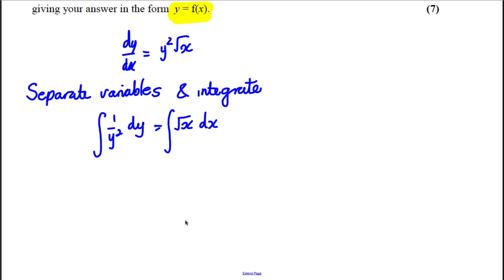So we're integrating 1/y² with respect to y, and we're integrating √x with respect to x. To integrate, it's easier if they're in index form, so we're integrating y^(-2) with respect to y, and we're integrating x^(1/2) with respect to x.